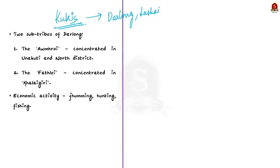Darlong is another tribe known as Kukis. Some sources say Kukis is a word used by outsiders to refer to groups of tribes like Darlong and Lushai, so it seems like a general term. This is why the government is aiming to include the Darlong tribe as a sub-tribe under the Kuki community. The Darlong tribe has two sub-tribes: Amroi and Fatlai. The Amroi tribe is concentrated in Unakoti and North District of Tripura, and the Fatlai tribe in the village of Kalaigiri in Unakoti district. Their major economic activities include Jhoom cultivation — slash and burn cultivation — and hunting and fishing.